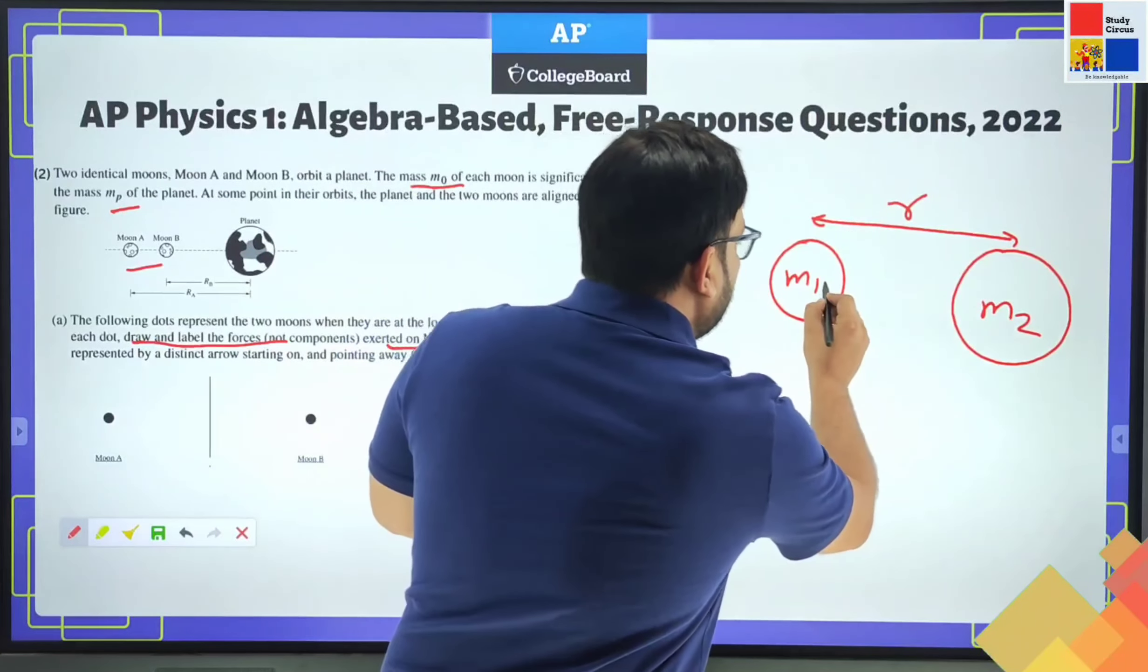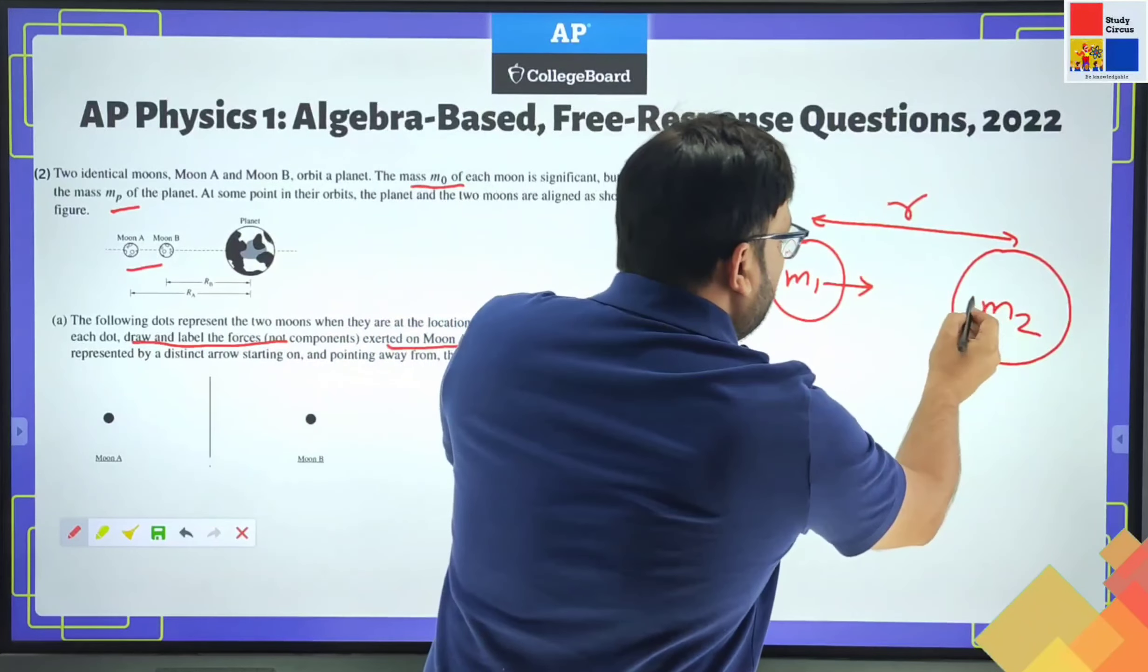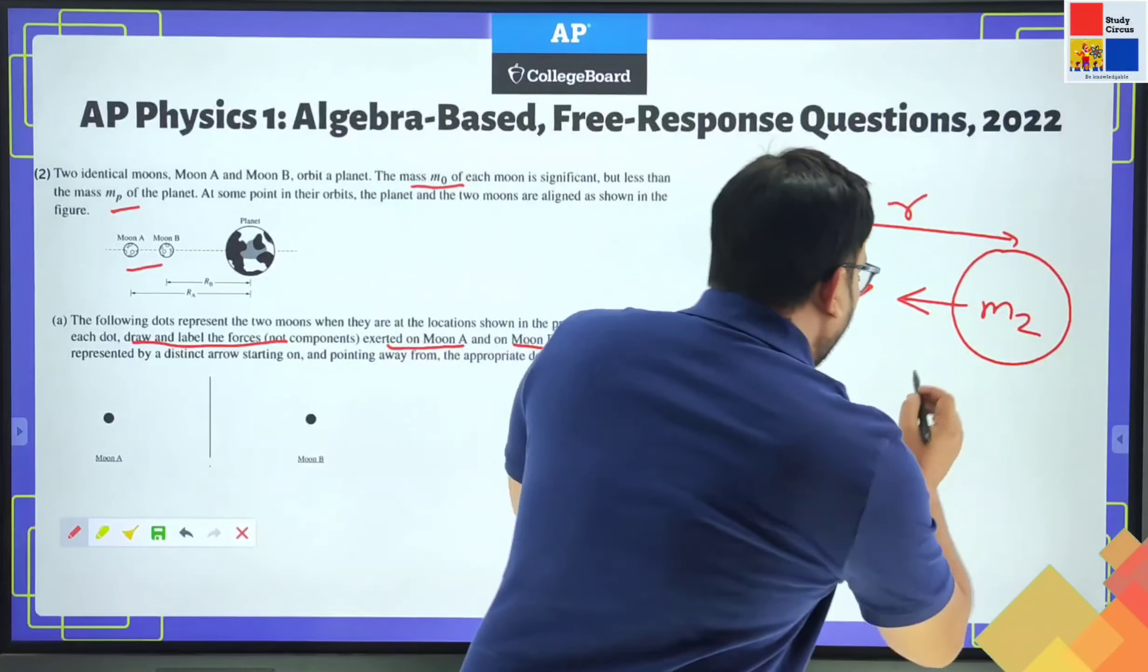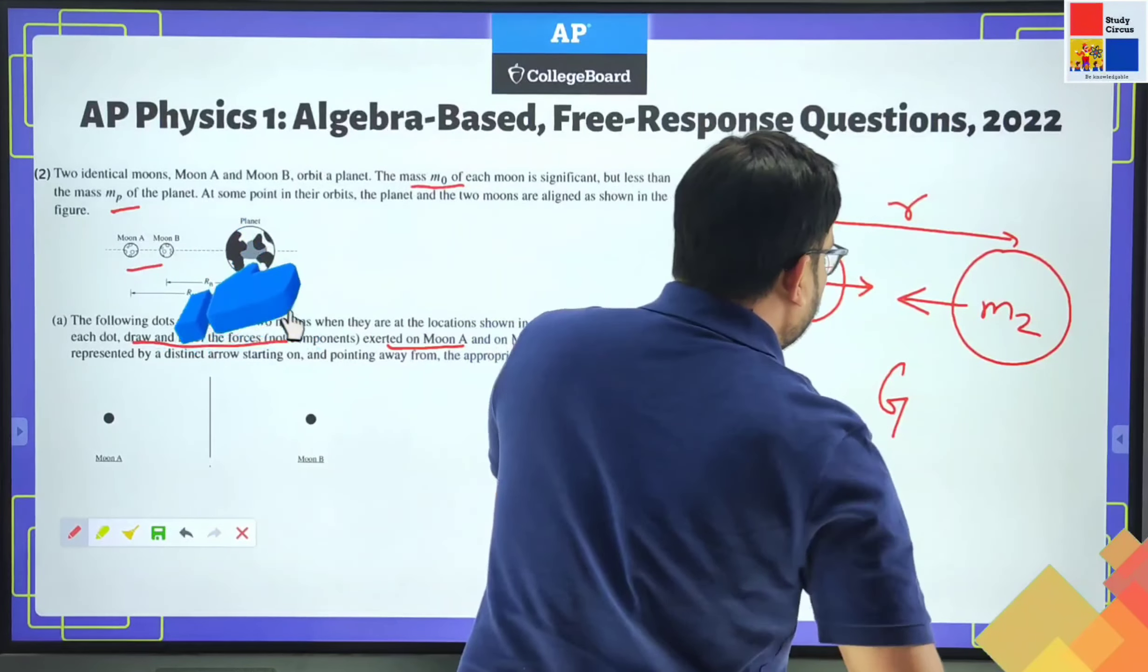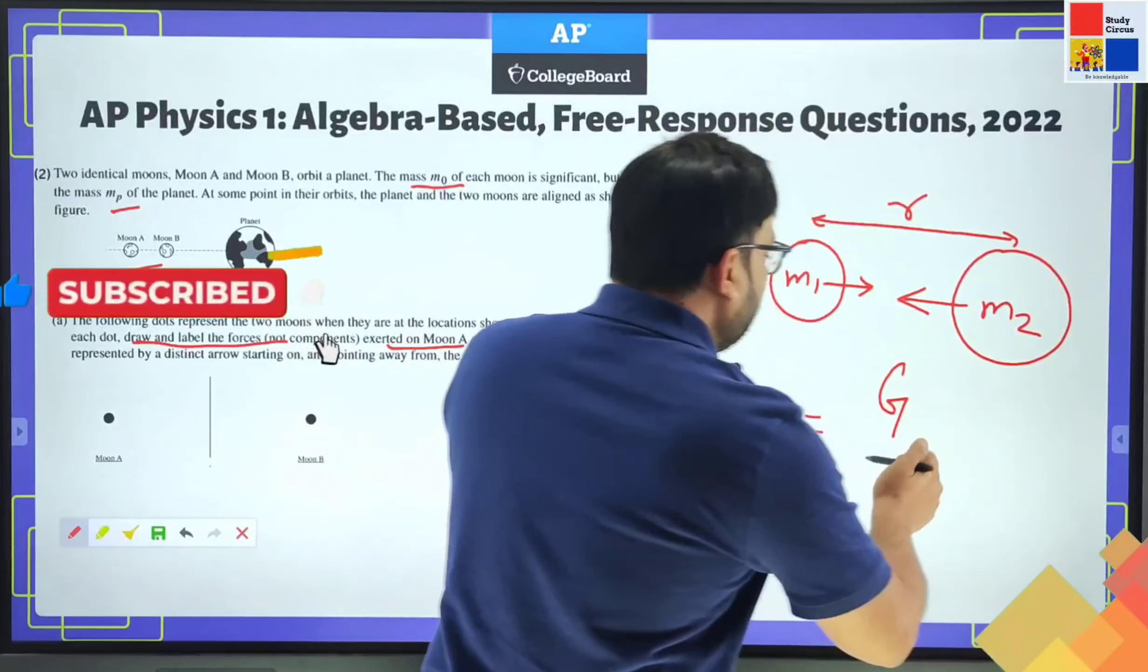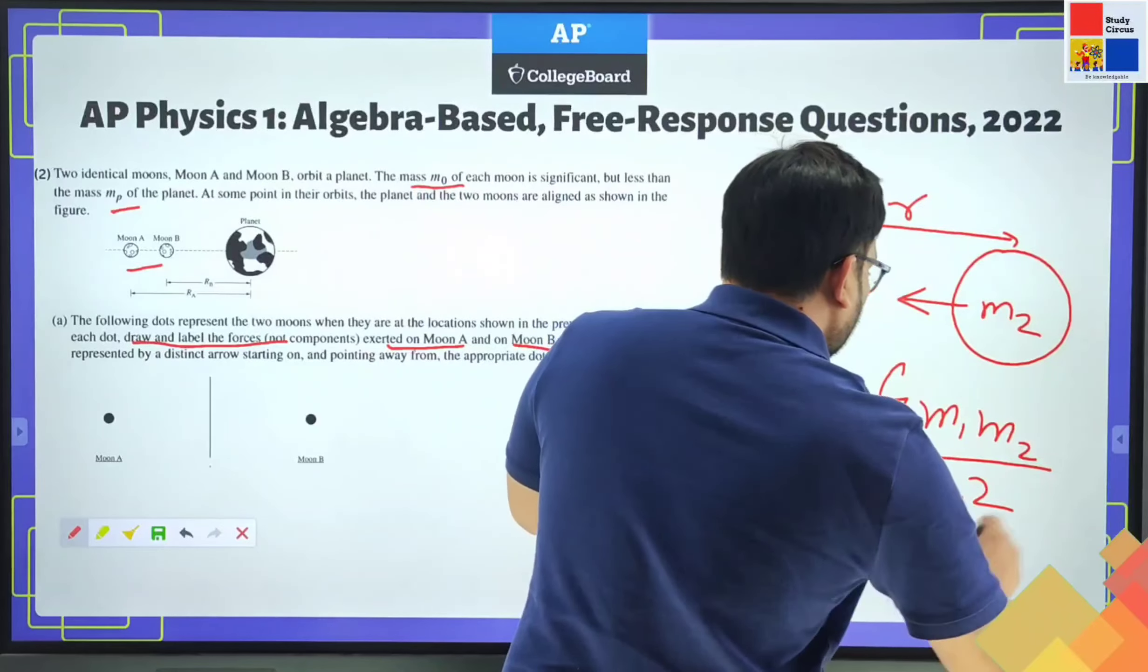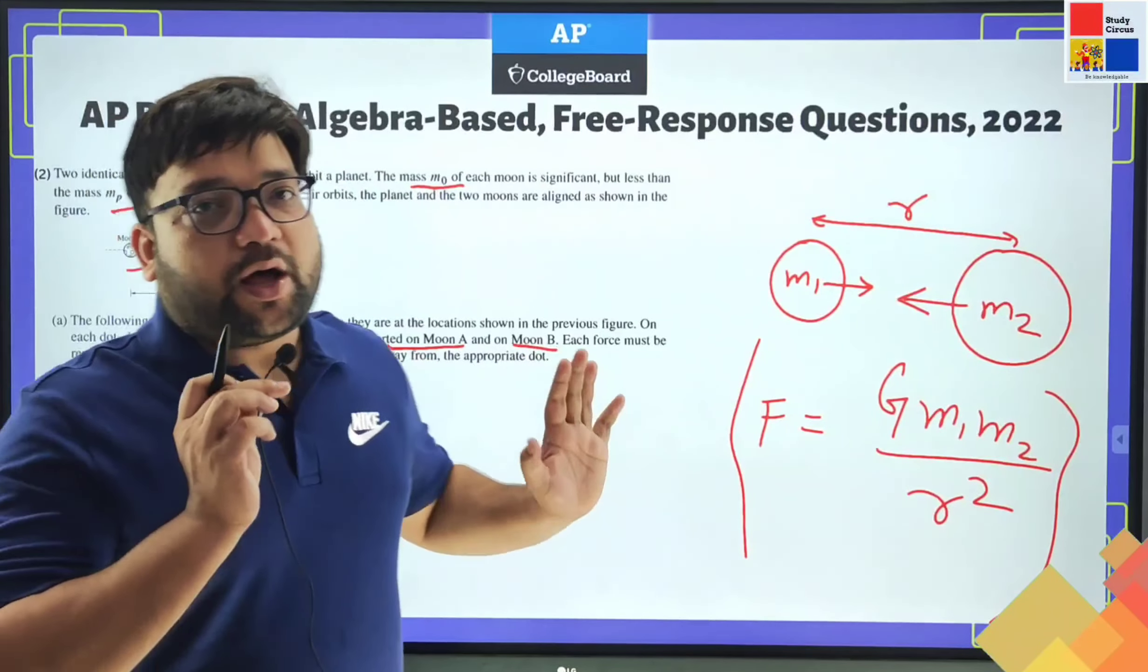And one will be pulled this way due to the gravitational pull of M2, equal and opposite value. So they are pulling each other with the same force. And how much is that? The force of attraction between them is G, that is the universal gravitation constant. It has a fixed value times M1 times M2 upon R squared. So this is the basic thing that we have to know in order to answer this question.